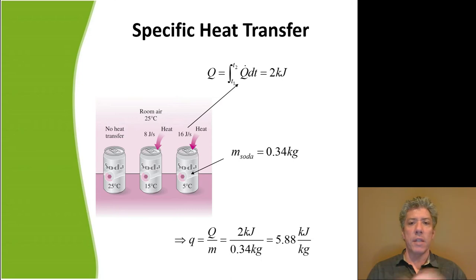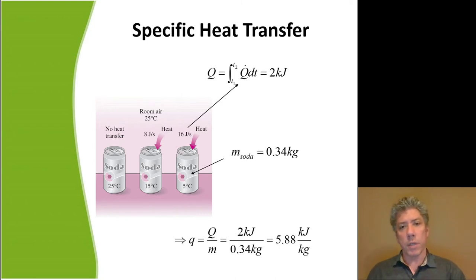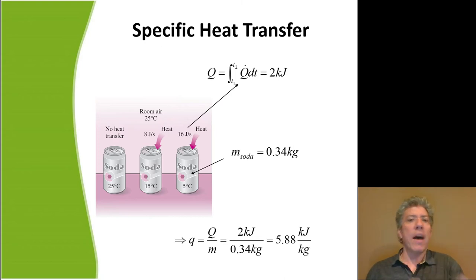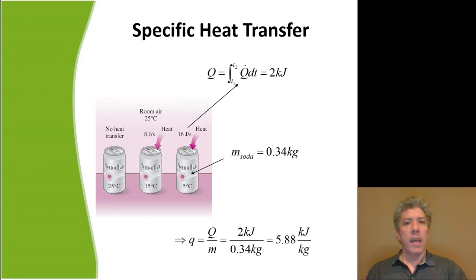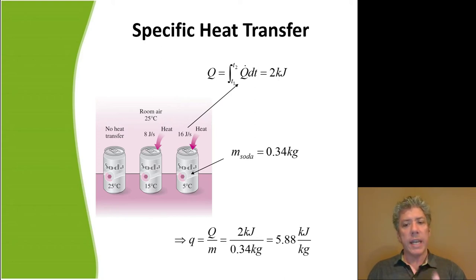To get the total amount of heat transferred we'd have to integrate the heat transfer rate over time since it's changing continuously. But let's say we know that two kilojoules of thermal energy has been transferred into the can. If there is about 0.34 kilograms of soda in the can, and we want to know how much energy is transferred to each kilogram, we take two kilojoules divided by 0.34 kilograms to get 5.88 kilojoules per kilogram to warm the soda from five degrees to 25 degrees Celsius.